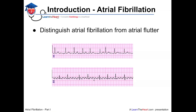Frequently, atrial flutter looks regular, although this example here is irregular, with variable conduction of the atrial activity to the ventricles — in certain areas a 4-to-1 conduction, in others a 5-to-1 conduction. The regularity of atrial flutter helps to distinguish it from atrial fibrillation, and this is a very important distinguishing factor specifically in regards to the approach to treatment.